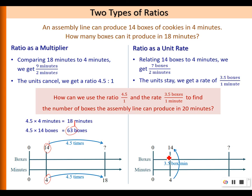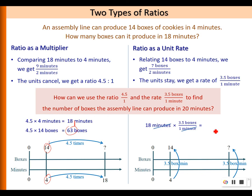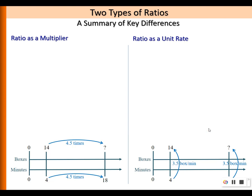If we use ratio as a unit rate: the unit rate relates 14 boxes to 4 minutes, which is 3.5 boxes per minute. This unit rate stays the same no matter how many minutes the assembly line is working. So in 18 minutes, we multiply the rate by 18 minutes. The minutes cancel, and the answer is in terms of boxes: 18 times 3.5 is 63. We get the same answer either way.